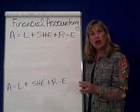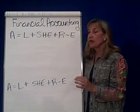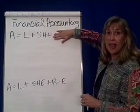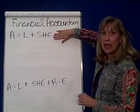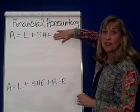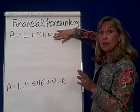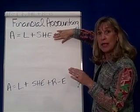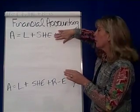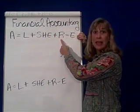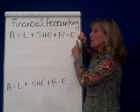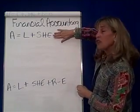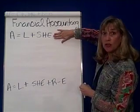When you start the year, your accounting equation is just this: assets equal liabilities plus stockholders' equity. The reason is that at the very beginning of the year, you haven't sold anything yet and you haven't consumed anything yet.